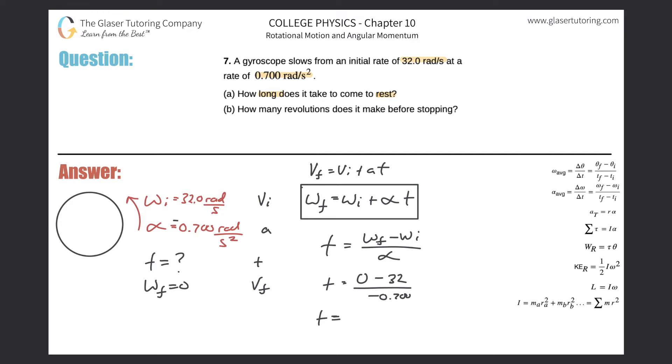So 32 divided by 0.7, that's basically what it comes out to. So in terms of sig figs I'm going to use three, so we got 45.7 seconds. That's how long it takes to come to rest given the information. So that is letter A.